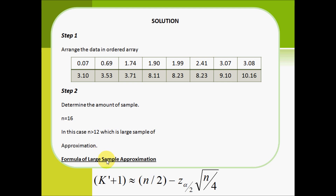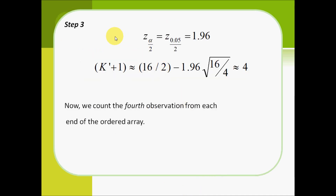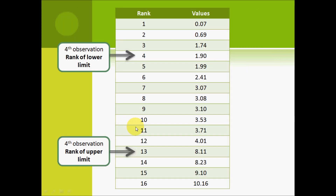We will use the formula: k' plus 1 is approximately equal to n over 2 minus z-alpha-over-2 times the square root of n over 4. Step 3: calculate z-alpha-over-2. With this formula, k' plus 1 is approximately equal to 4. We then count the fourth observations from each end of the order array. These are the observations corresponding to the rank of the lower limit.